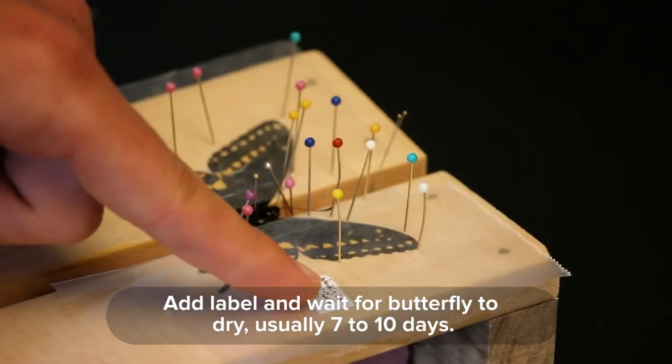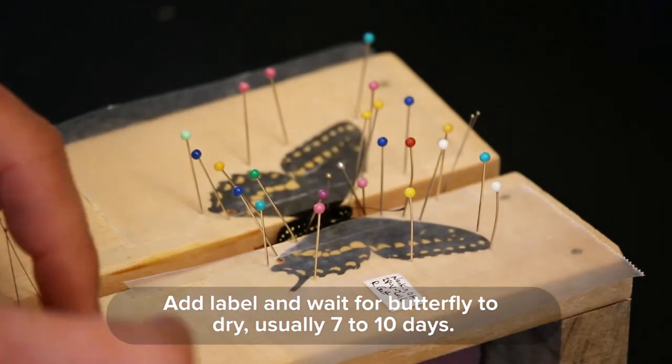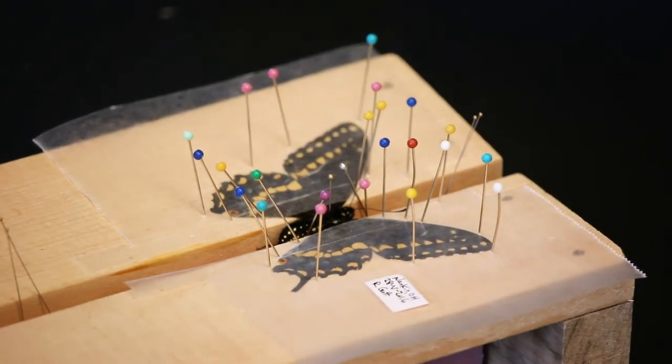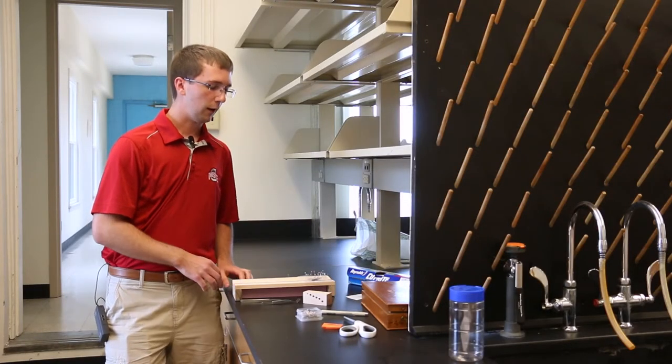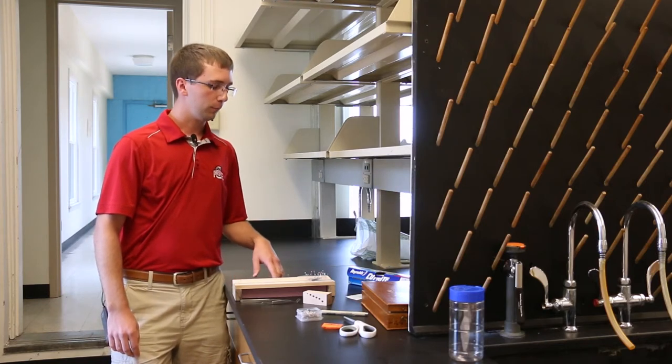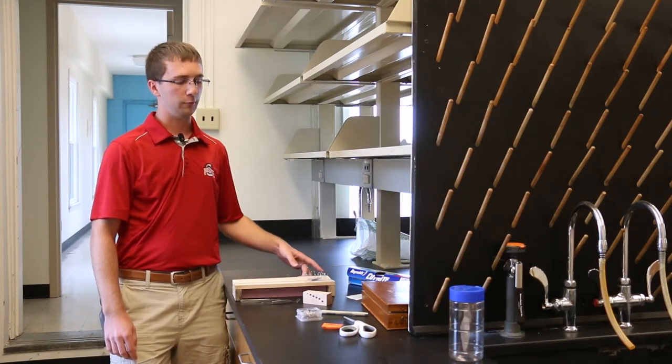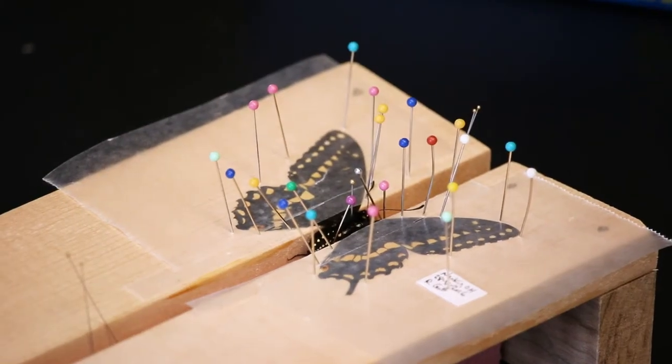Now we have a butterfly specimen that has been spread properly and will be ready in seven to ten days depending on the environmental conditions such as humidity. If the humidity is high, sometimes it'll take longer for the butterflies to dry because you have to wait for the moisture to evaporate from the butterflies to hold the wings in the proper position.